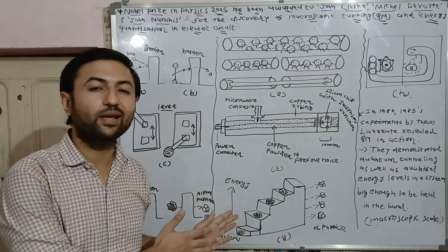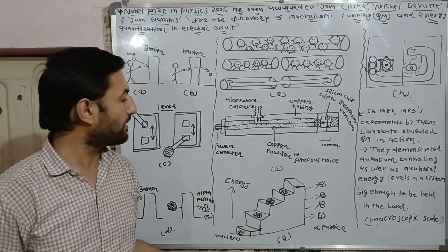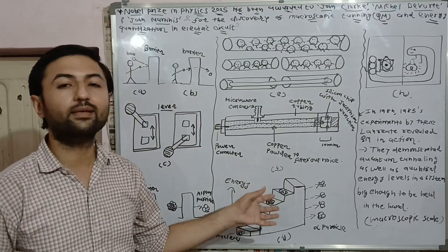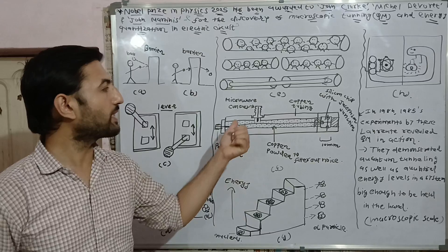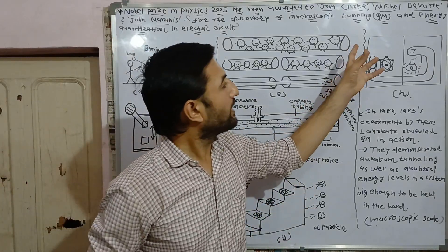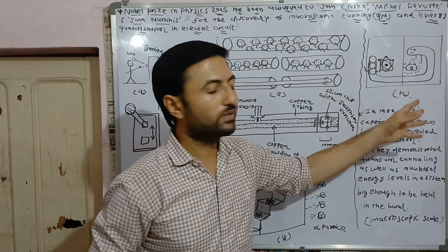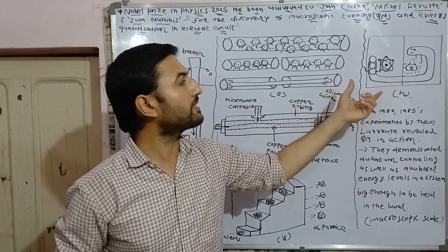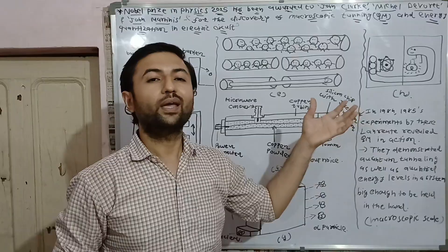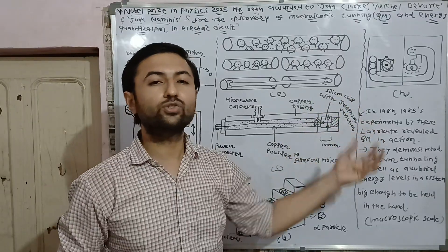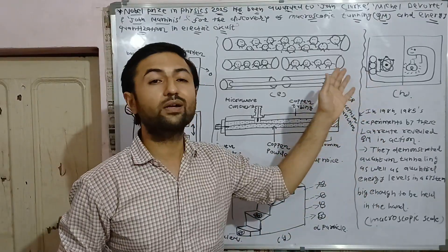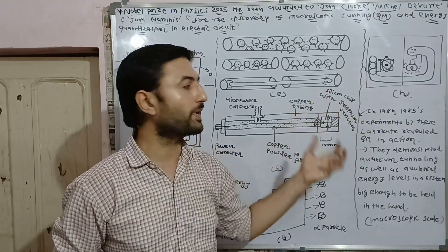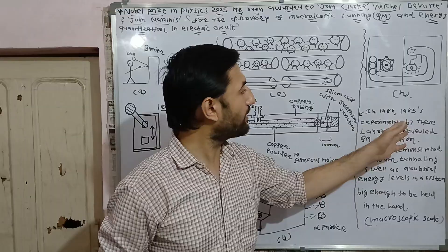This is another salient feature of this experiment. Here by considering nuclear physics, I have explained this salient feature of this experiment. This is the schematic diagram of this whole experiment in which giant Cooper pairs play an important role in the electrical circuit to demonstrate macroscopic tunneling as well as energy quantization.